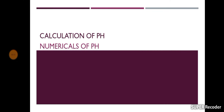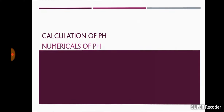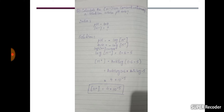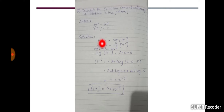Assalamu alaikum students. In this video I will discuss the calculation of pH numericals. The first numerical is: calculate the hydrogen ion concentration of a solution whose pH is 4.4. Here, the pH is given and we have to find the hydrogen ion concentration. We will use the formula: pH is equal to negative log of hydrogen ion concentration.